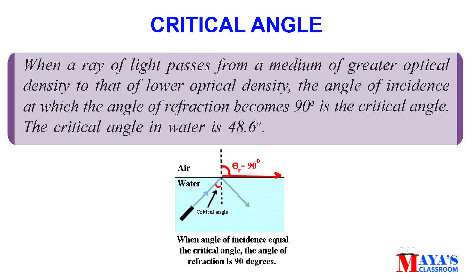When a ray of light passes from a medium of greater optical density to that of a lower optical density, the angle of incidence at which the angle of refraction becomes 90 degrees is the critical angle. The critical angle for water is 48.6 degrees.